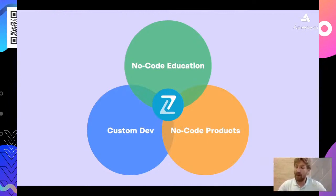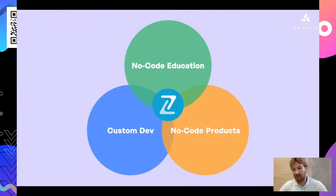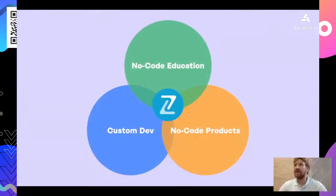The third area — no-code products — is something we slid into pretty early on as well. We wanted to scale and not be directly tied to our time. Both consulting and custom development are always limited to hours and hourly rates. With no-code products, things are much more scalable — it depends on the amount of people you attract and the value you deliver. If a million people buy a product, that's a million dollars — though please don't sell one-dollar products.